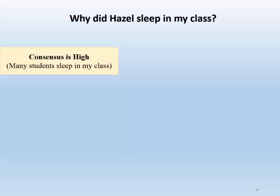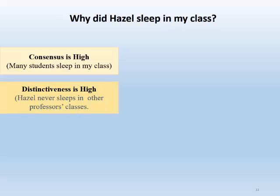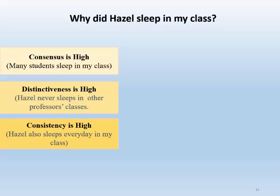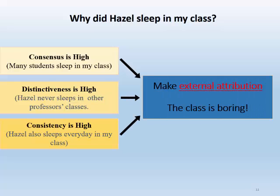Let's look at a second example. Imagine a situation in which many students sleep in my class — consensus is high. In addition, I know that Hazel never sleeps in other professors' classes — distinctiveness is high. And lastly, I know that Hazel sleeps in all of my classes — consistency is high. In this example, consensus, distinctiveness, and consistency are all high. Thus, I am most likely to make an external attribution and attribute Hazel's sleeping to some external characteristic, such as the class being boring.